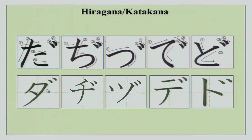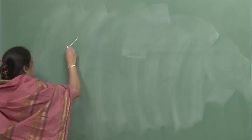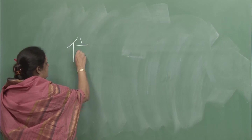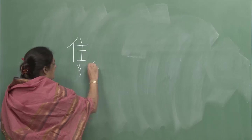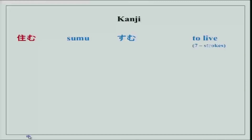Now there are a lot of kanji today, but very simple ones. The kanji for sumu — to live — has 7 strokes: 1, 2, 3, 4, 5, 6 and 7. Su and mu. Sumu is to live. It is a 7-stroke character.